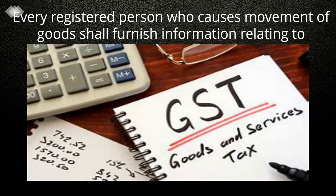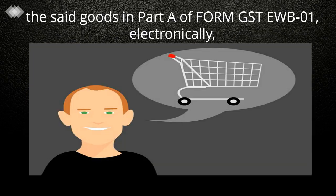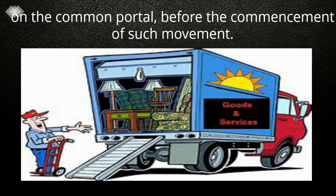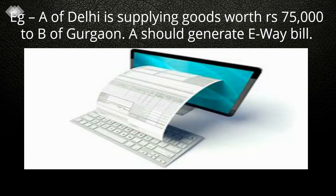Who Shall Furnish Details: Every registered person who causes movement of goods shall furnish information relating to said goods in Part A of Form GST EWB-1 electronically on the common portal before the commencement of such movement. For example, A of Delhi is supplying goods worth Rs. 75,000 to B of Gurgaon — A should generate the E-Way Bill.